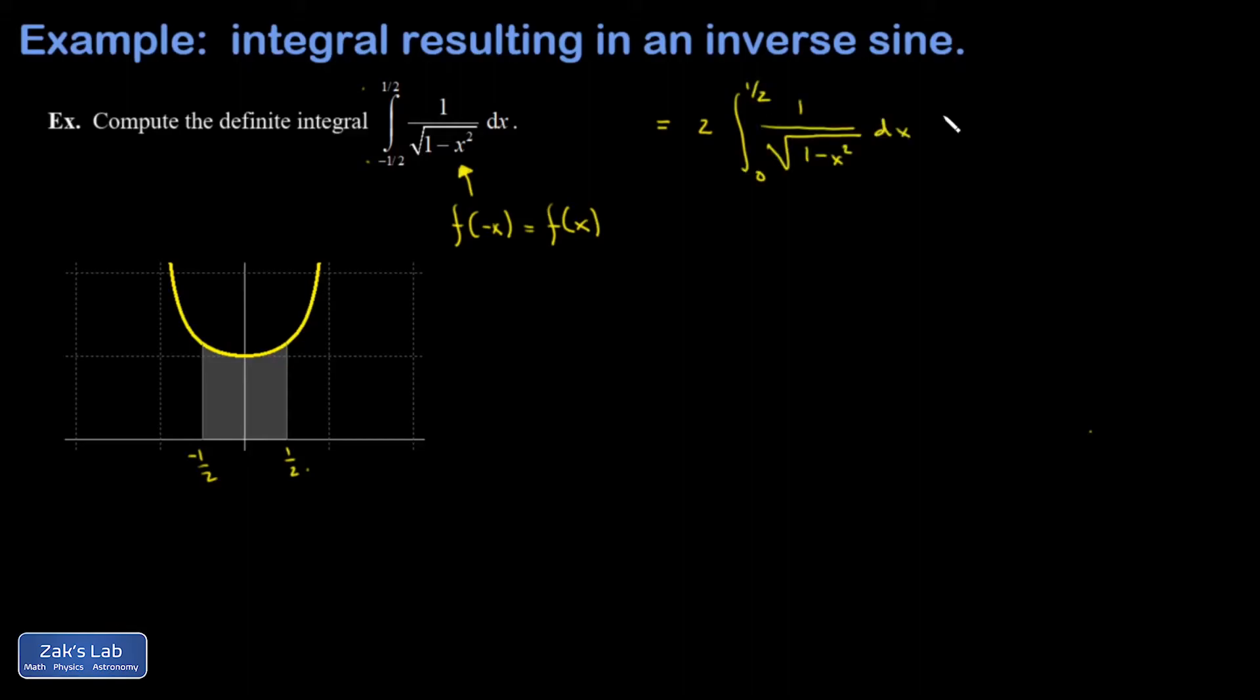At this point then I just recognize that one over square root one minus x squared is the derivative of the inverse sine function. So I'm going to write down this is equal to two inverse sine of x evaluated from zero to one half.